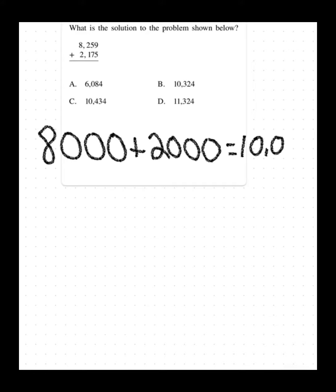If I add those two numbers together, I end up with 10,000. So this tells me that A is definitely not the right answer, and D is likely not the right answer. So I'm left with B and C.